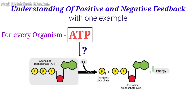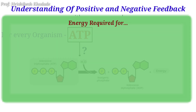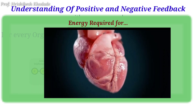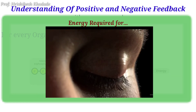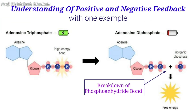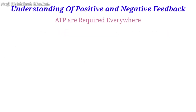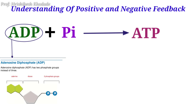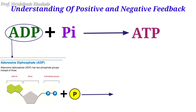The breakdown of these bonds releases energy, which is used for purposes such as muscle contraction, heartbeat, organ movement — even your eyelid movement takes place by the energy derived from the breakdown of these phosphoanhydride bonds in ATP molecules. So it is clear that everywhere ATP is required. These ATPs are prepared by the joining of ADP and inorganic phosphate together. ADP means adenosine with two phosphate groups, and joining a third phosphate group results in the formation of ATP.